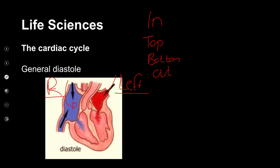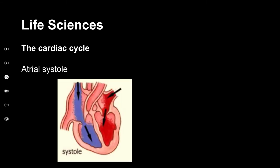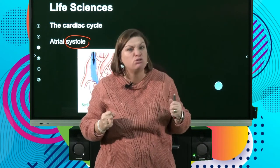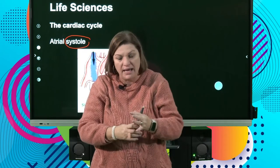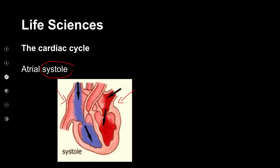Then what happens is I need to get it from the top to the bottom. I've got a muscle — so how does a muscle work? A muscle squeezes, and the word for squeezing is systole. So if I take the atria and squeeze it — imagine it's like a balloon or your toothpaste — I squeeze it. Where is the blood going to go? From the top to the bottom.